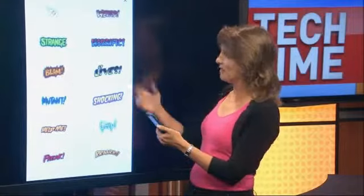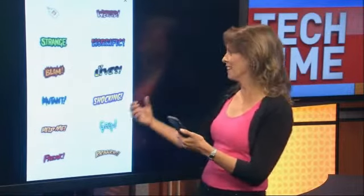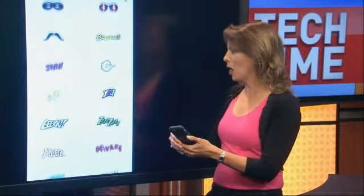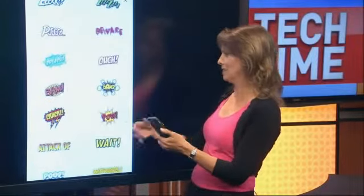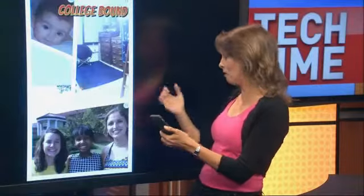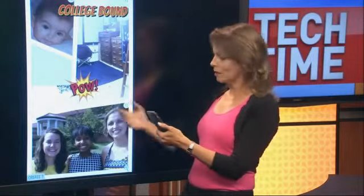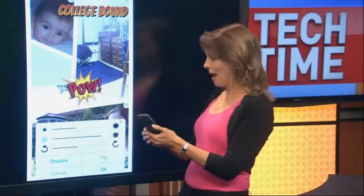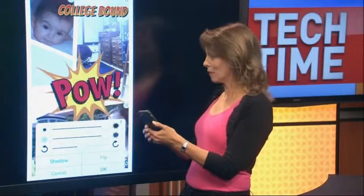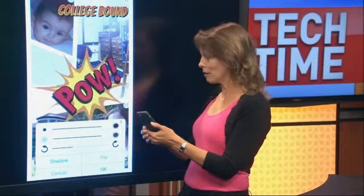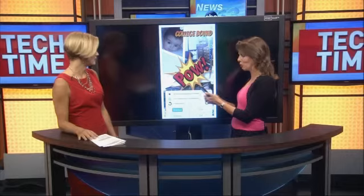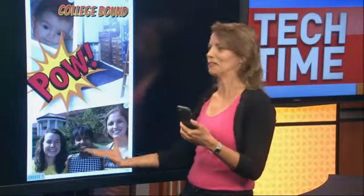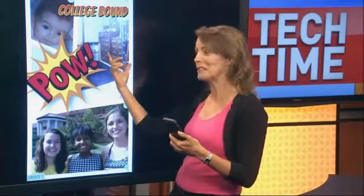I'm going to pick some of those — blam, horrific, shocking. Our story here is that you've gone from a baby to a college-bound student in a matter of seconds. I'm going to use pow. It's a little small, so you can tap on it and adjust it really easily. I'm going to make it larger, and you can rotate it, change its transparency, give it shadows — all kinds of things. Here we have our baby that's in a second turned to college-bound living in a dorm room.